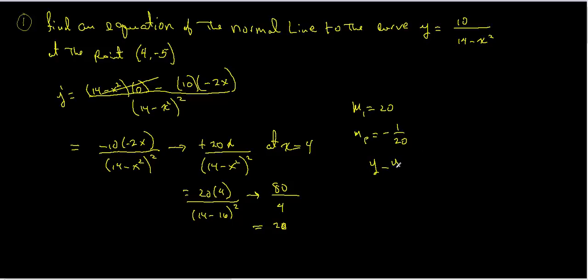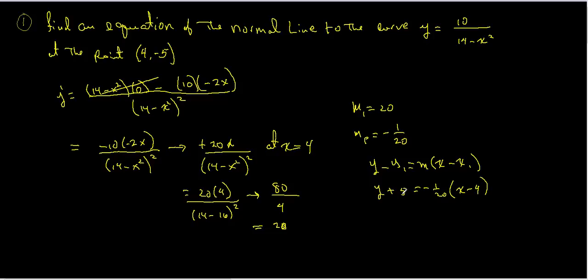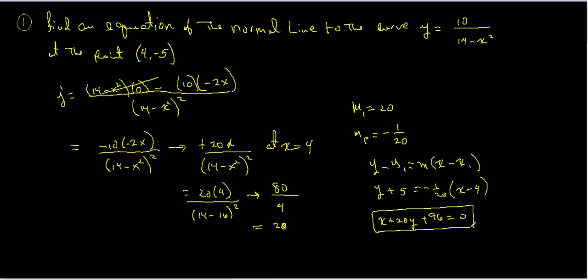Using y minus y₁ equals m times x minus x₁, and since y₁ is negative 5, we get y plus 5 equals negative 1 over 20 times x minus 4. Simplifying and putting it in standard form gives us x plus 20y plus 96 equals 0, and this is the equation of the normal line.